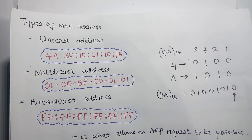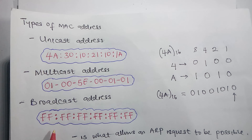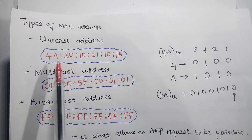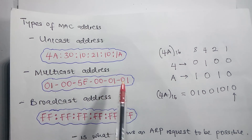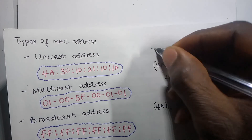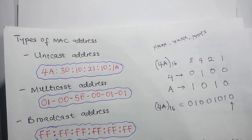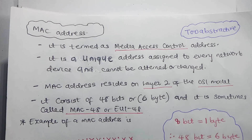MAC addresses are written in different notations. Apple products typically use colons (e.g., XX:XX:XX:XX:XX:XX), Microsoft uses dashes, and Cisco uses a dot notation (e.g., XXXX.XXXX.XXXX). They are all the same address, just formatted differently — so don't be confused. To summarize: a MAC address is a Media Access Control address, and it is the unique address of a network device.